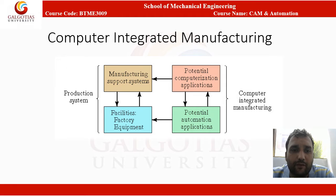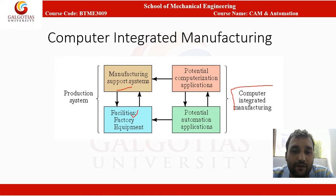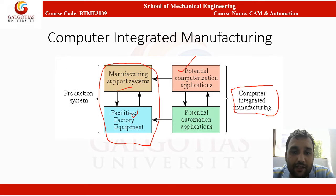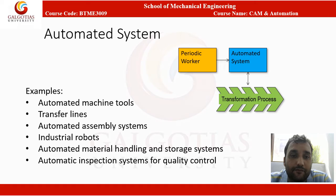Next is computer integrated manufacturing, which is the combination of the manufacturing support system with facilities, factories, and their computerization applications. The facility and factory equipment have potential automation applications. When all these forces are integrated — the potential computerization applications and potential automation applications, both controlled by computer — that is called computer integrated manufacturing.